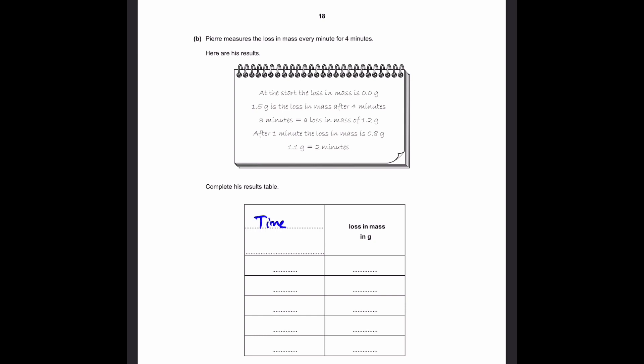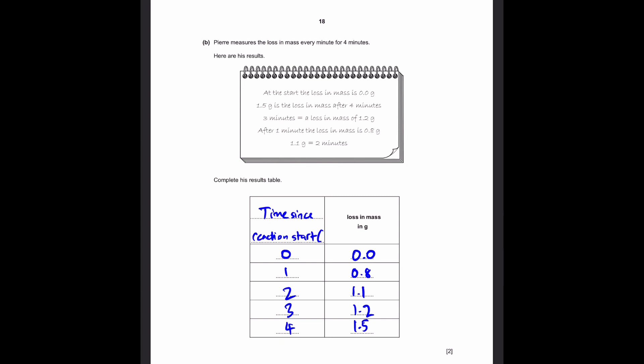Now we write the five values which are written here. So at the start, which is 0 minutes, the loss in mass is 0.0 grams. Now 1.5 grams is after 4 minutes, but we don't write this first. We have to write in chronological order, which means in order of time. So we write 1 minute first, then 2 minutes, 3 minutes, and 4 minutes. After 1 minute, the loss in mass is 0.8 grams. After 2 minutes, 1.1 grams. 3 minutes, 1.2 grams. And 4 minutes, 1.5 grams. This is in minutes, not seconds.